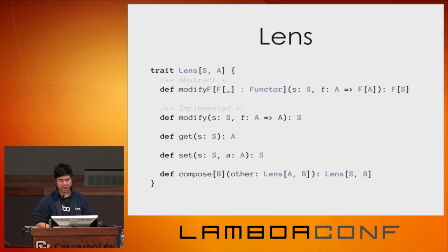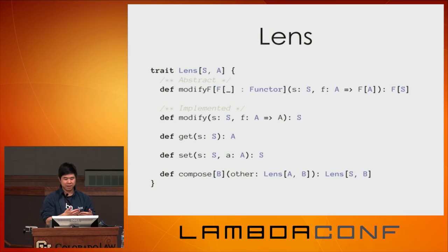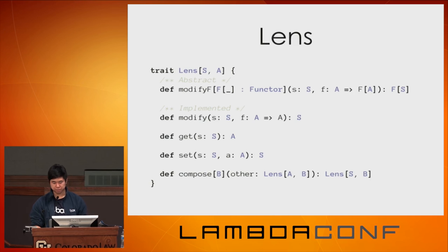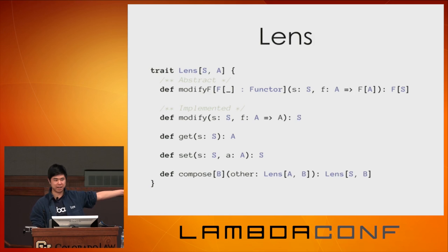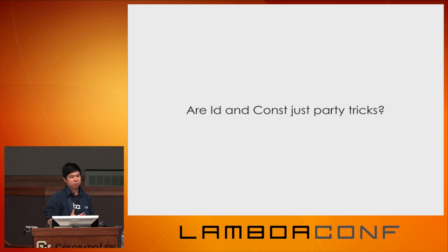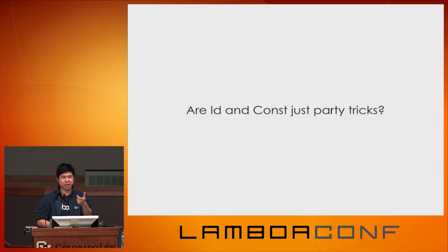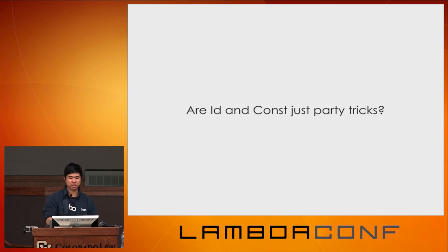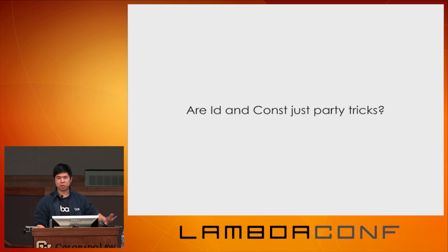The interesting point is that Identity and Const — which we used to implement get and set in terms of modifyF — weren't just a convenient trick for lenses. I'll show another example where they become useful, just to show they're not a one-off trick.